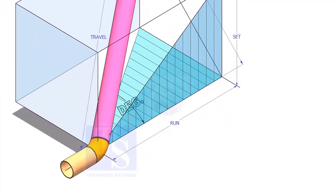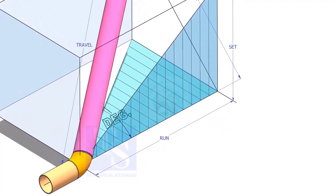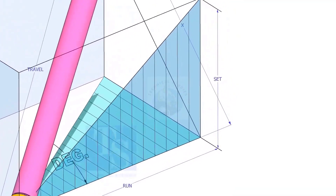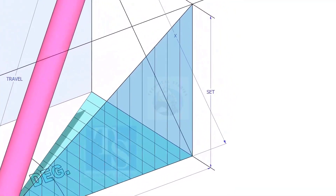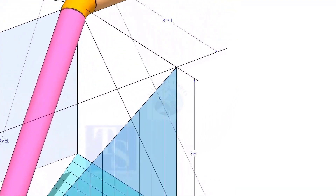In this video, I will show you how to calculate the travel length and the including angle of a double rolled offset pipe.